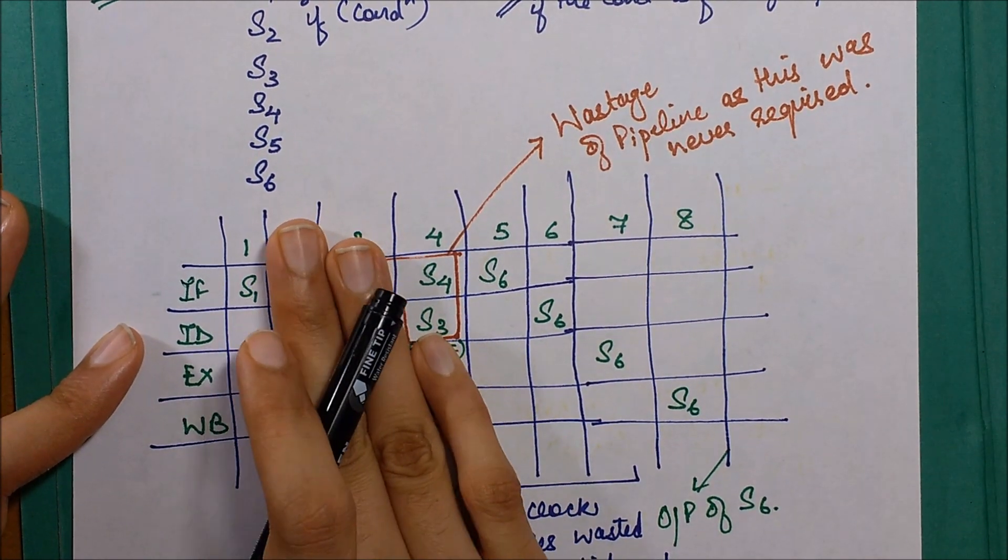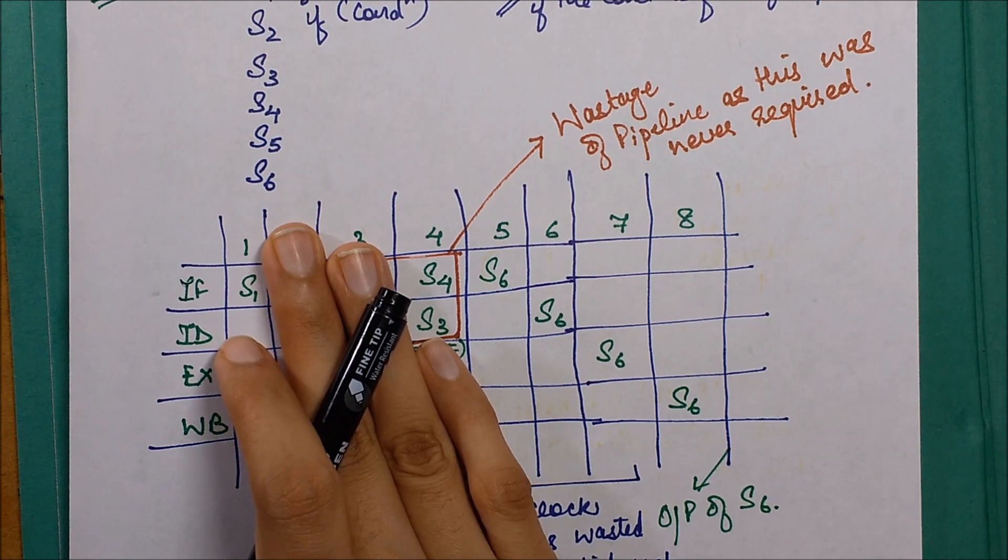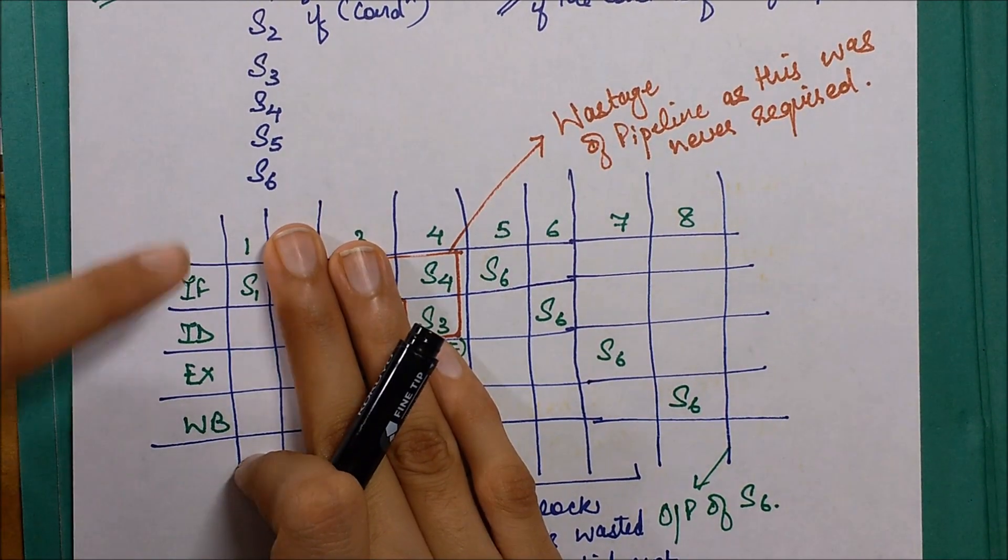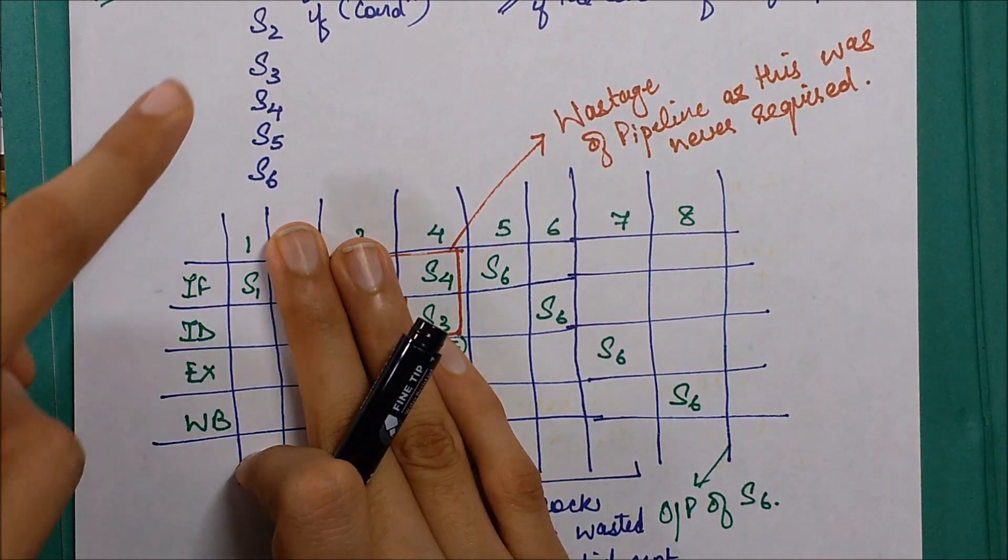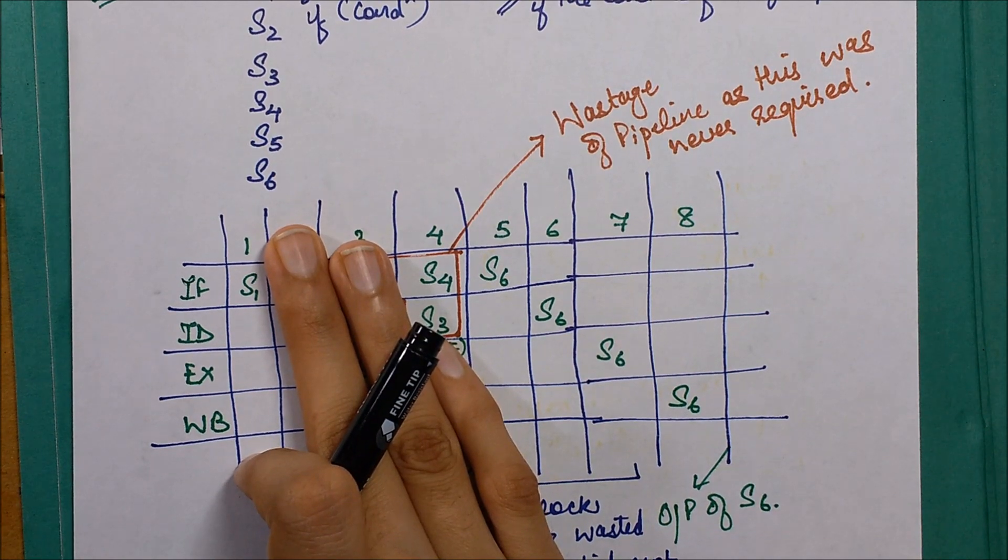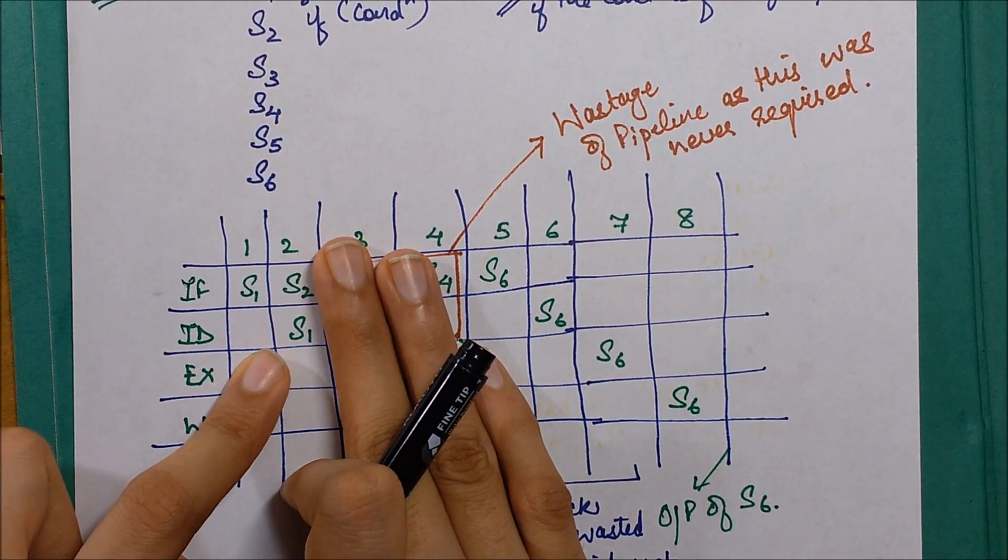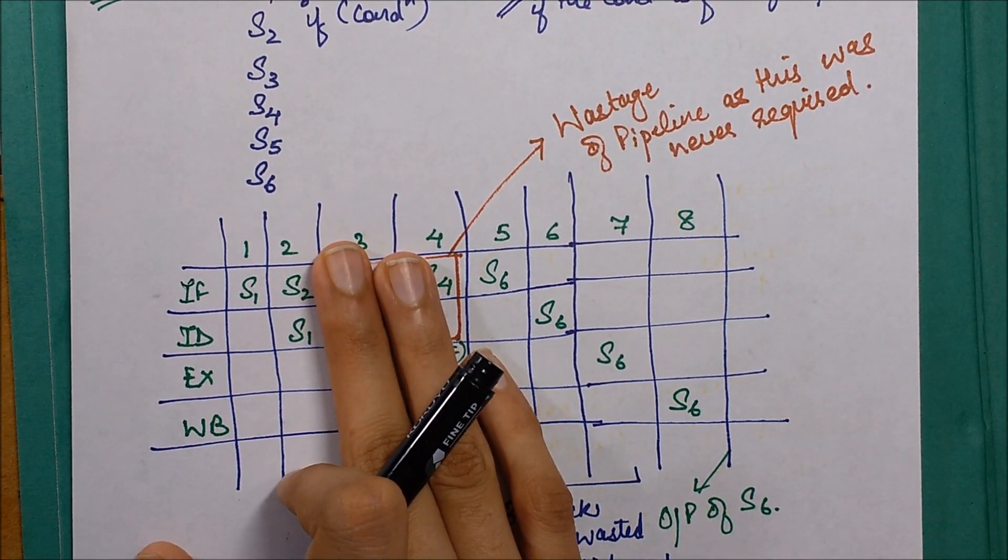In the first clock pulse we write down S1 in instruction fetch. We try to fetch this first instruction. Then in the second clock pulse we fetch S2 and start the ID phase of S1. This S1 can be anything, we are not going into the details of this.